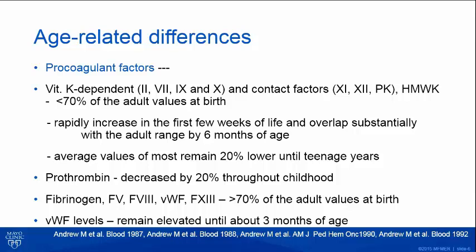The pro-coagulant factors — the vitamin K-dependent factors and the contact factors — are all extremely low at birth. They rapidly increased in the first few weeks of life, and by about six months of age they overlapped substantially with the adult ranges. However, the average values remained about 20% lower until the teenage years, with prothrombin especially decreased about 20% throughout childhood.